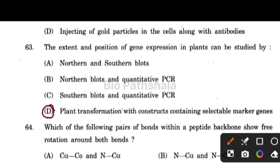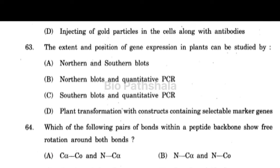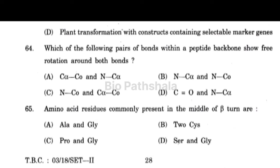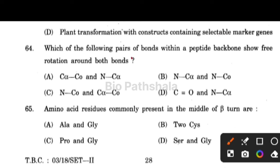Next question: which of the following pair of bonds within a peptide backbone show free rotation around both bonds? That is option number A — the bond between Cα and C. Here free rotation is observed. Where there is a double bond, free rotation is not possible as it would be too strong.